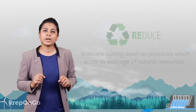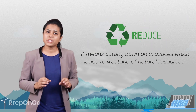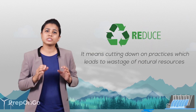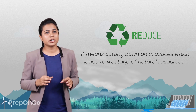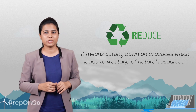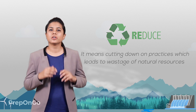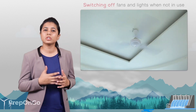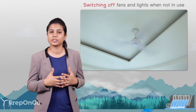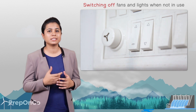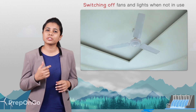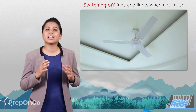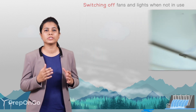The first one is reduce. The best thing we can do is use less of these natural resources by cutting down on the practices which lead to their wastage. For example, we can reduce the wastage of electricity by switching off the lights and fans when they are not in use. Saving electricity means that we are reducing the use of coal, which is used to produce electricity.